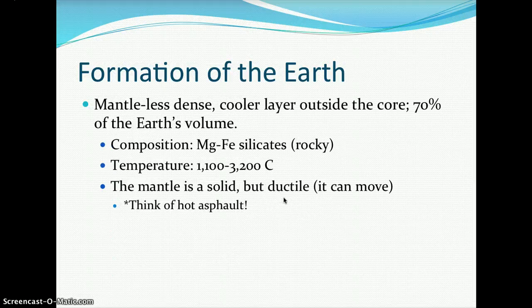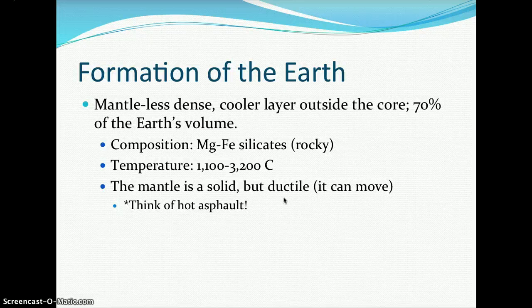The mantle is less dense — a cooler layer outside the core. 70% of Earth's volume is the mantle itself. Its composition includes magnesium and iron silicates, which is basically rock. The temperature is 1,100 to 3,200 degrees Celsius. The mantle is solid but ductile — it can move. Think of hot asphalt, which can move as you are building a blacktop surface.